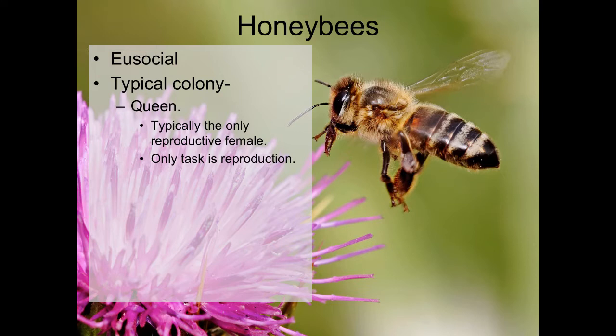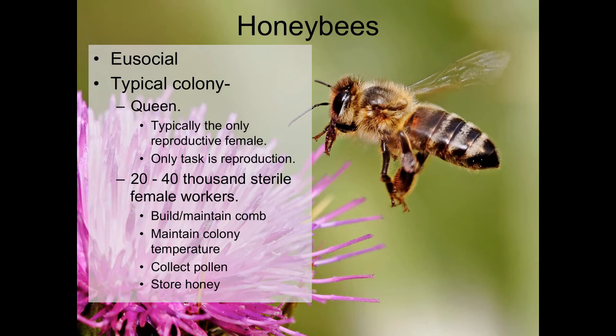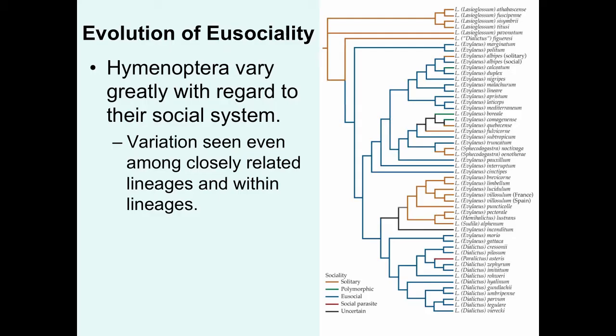One of the classic examples of a eusocial species is honeybees. In a typical honeybee colony, the queen is the only reproductive female and her only task is reproduction. The rest of the hive is made up of between 20,000 and 40,000 sterile female workers that build and maintain the comb, maintain colony temperature, collect pollen, and store honey — all directed toward increasing the reproductive success of the queen, who eventually produces future queens and males to mate with queens of other hives.